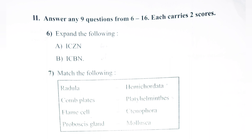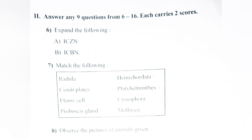Question 6: Expand the following abbreviations. a. ICZN, b. ICBN. Answer: a. ICZN — International Code of Zoological Nomenclature. b. ICBN — International Code for Botanical Nomenclature.